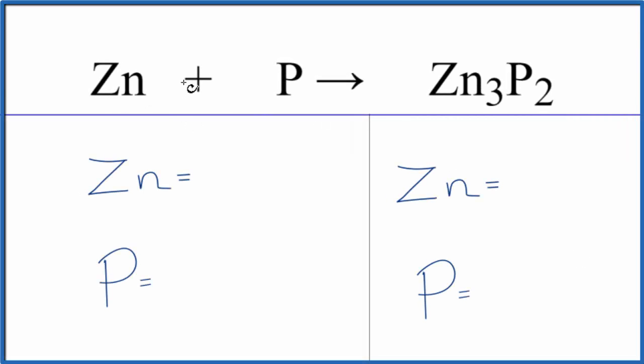To balance this equation, we have Zn plus P, and that gives us Zn3P2. Zn plus phosphorus gives us zinc phosphate.